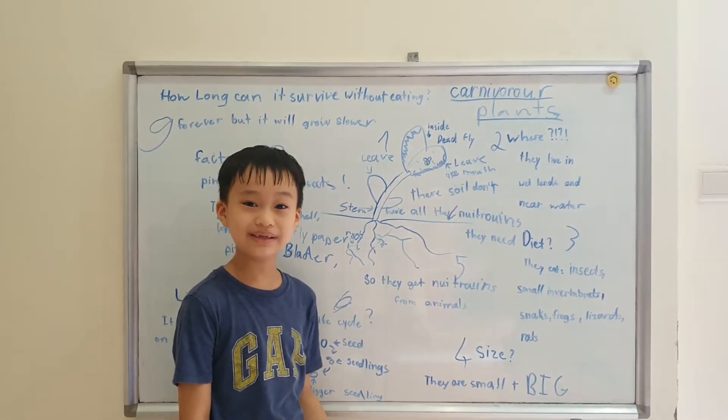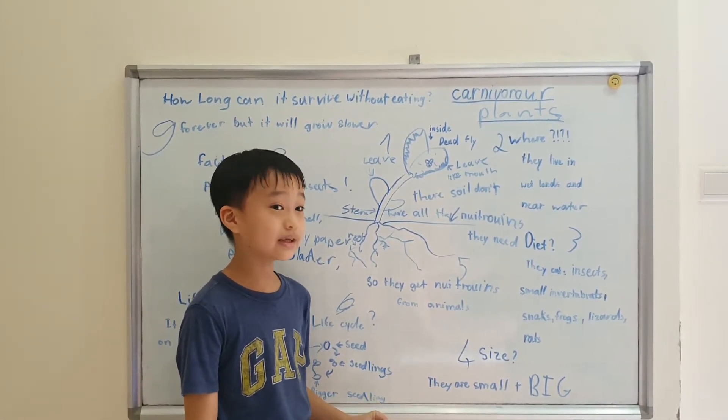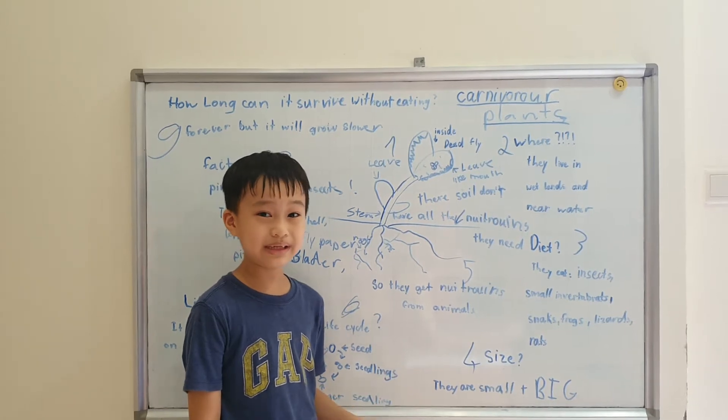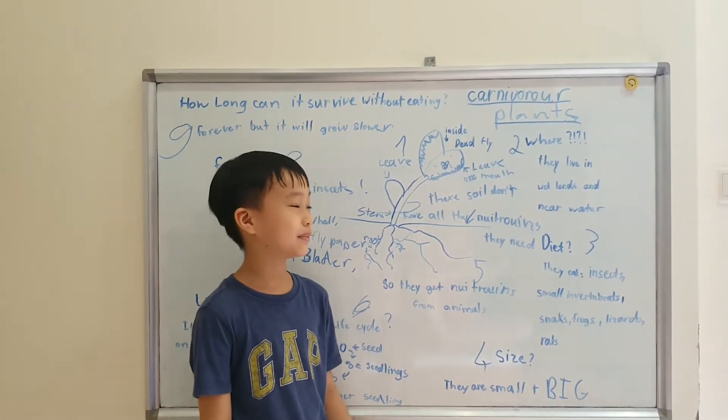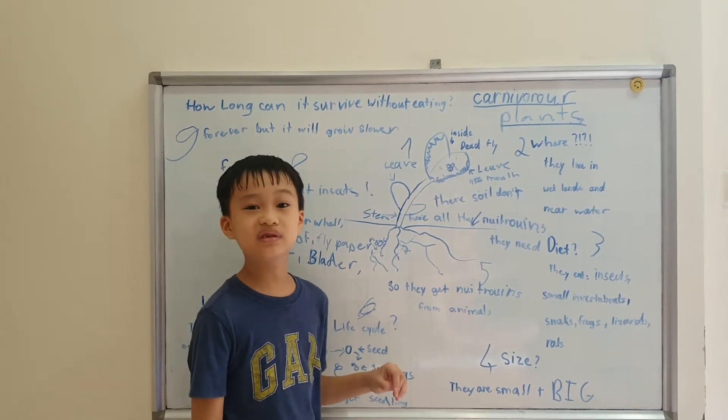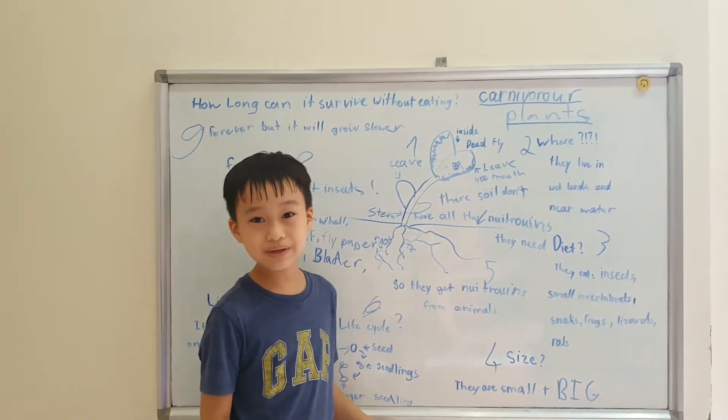This mouth is for catching insects. It is carnivorous, that means it only eats meat. Herbivorous means it only eats plants. And omnivorous means it eats both meat and plants.